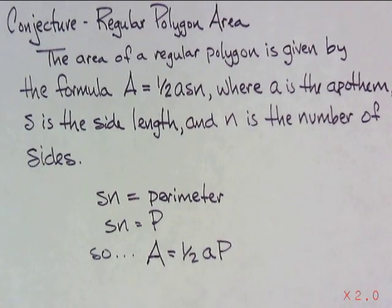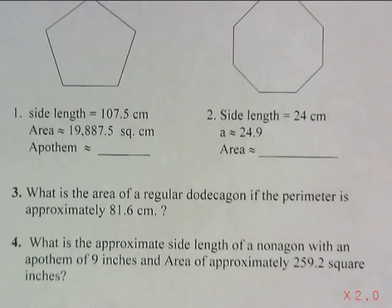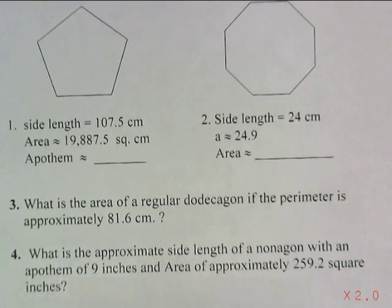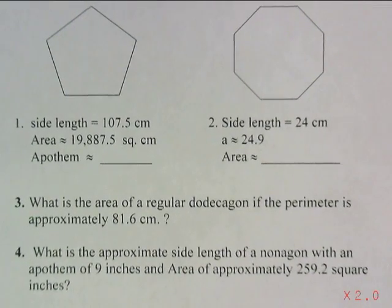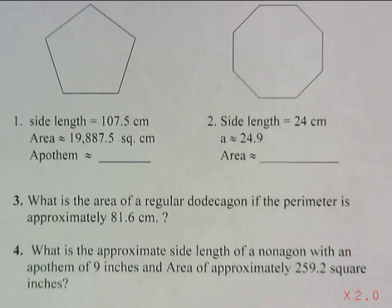And then, finally, what you've all been waiting for, some questions. Right here, I have a pentagon with side length of 107.5 centimeters, an area that's approximately 19,887.5 square centimeters. And I want to know what the approximate apothem is. Number two, side length is 24 centimeters. The apothem is about 24.9. And the area is what? Three, what is the area of the regular dodecagon if the perimeter is approximately 81.6 centimeters? And four, what is the approximate side length of a nonagon with an apothem of 9 inches and an area of approximately 259.2 square inches? All right, good luck. See you soon. Bye.